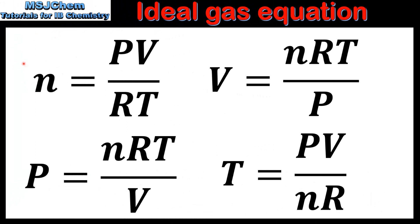Next we look at how the ideal gas equation can be rearranged to calculate for N, V, P, or T. N, which is amount in moles, is equal to PV over RT. V, which is volume in meters cubed, equals NRT over P. P, which is pressure in Pascals, equals NRT over V. And T, which is temperature in kelvin, equals PV over NR.